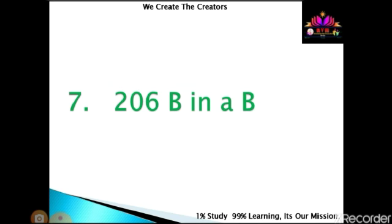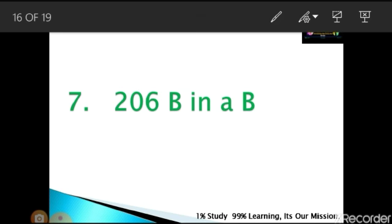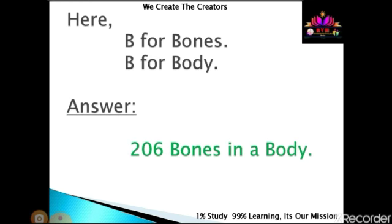206 B in a B. Any guesses, dear? Answer: first B for bones, second B for body. The answer is 206 bones in a body.